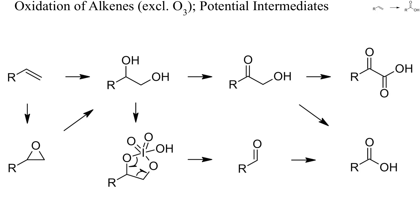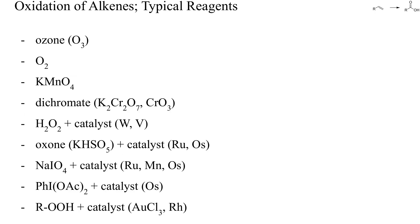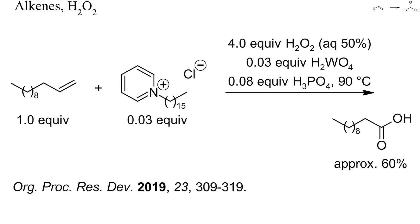Here I've sketched some potential intermediates of such cleavage reactions. These include epoxides, diols, aldehydes, alpha-hydroxyketones, and alpha-keto acids. Here you have a list with typical reagents for oxidative alkene cleavage. Most of them require transition metal catalysis. Let's check some specific examples.